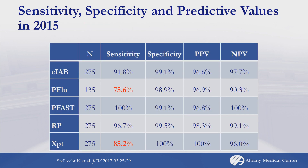We were surprised by the performance of some of these tests with this collection of samples. In particular, ProFlu had a lower sensitivity than we expected — in our hands previously, ProFlu was always considered our gold standard, the most sensitive. But what was also happening at that time, in late 2014 and 2015, the CDC was reporting multiple clades of influenza emerging and causing vaccine failure.